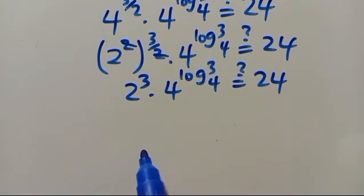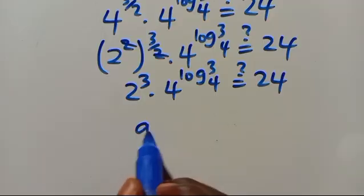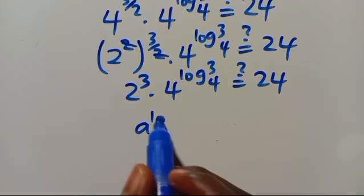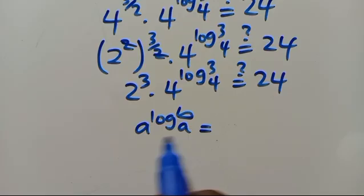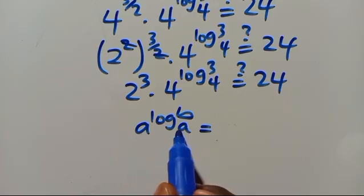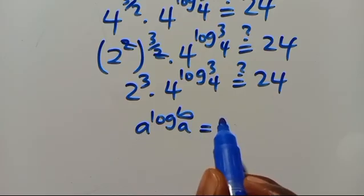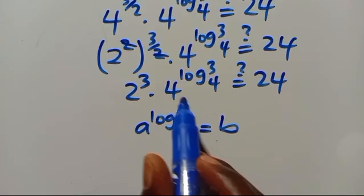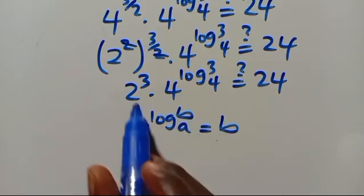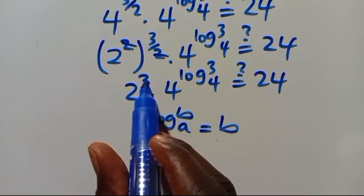Recalling that a to the power of log base a of b equals b — since the base matches — the term 4 to the power of log base 4 of 3 equals 3.